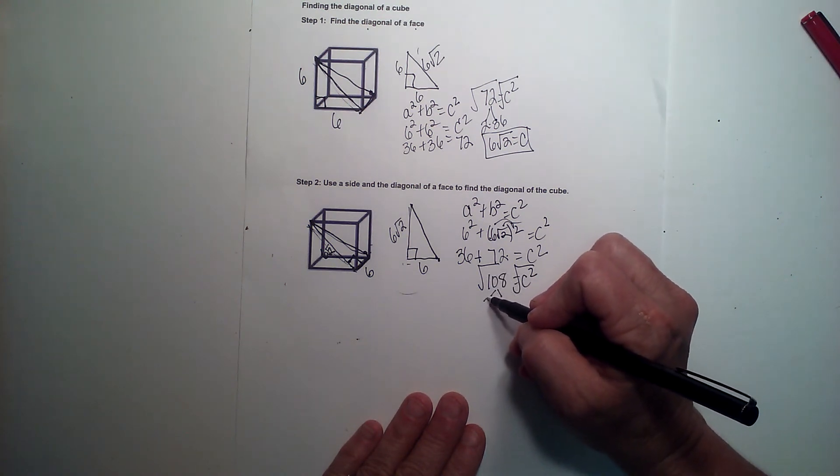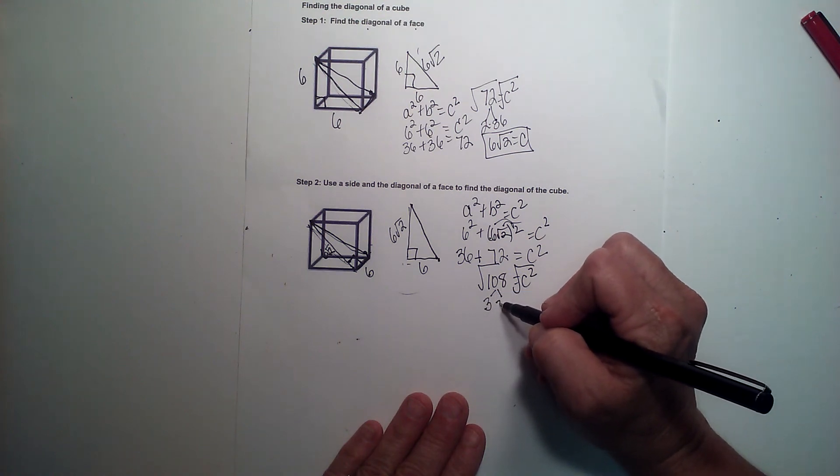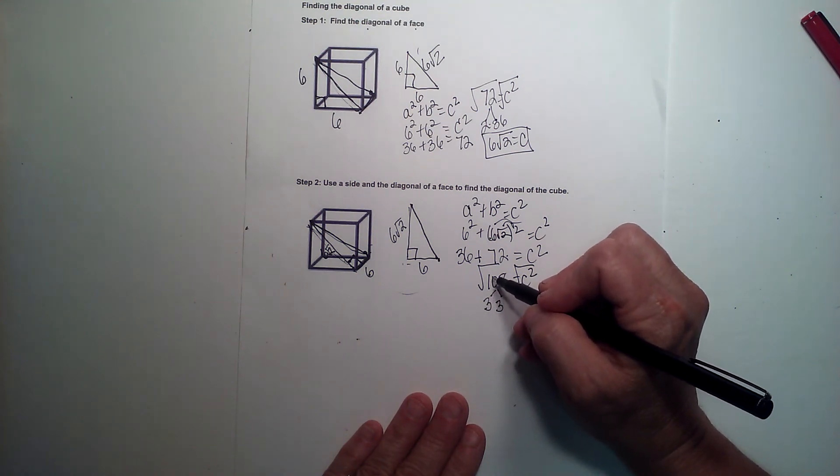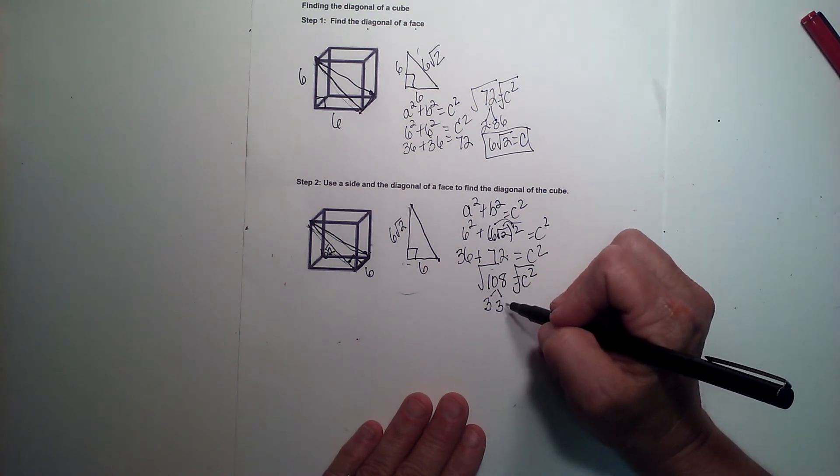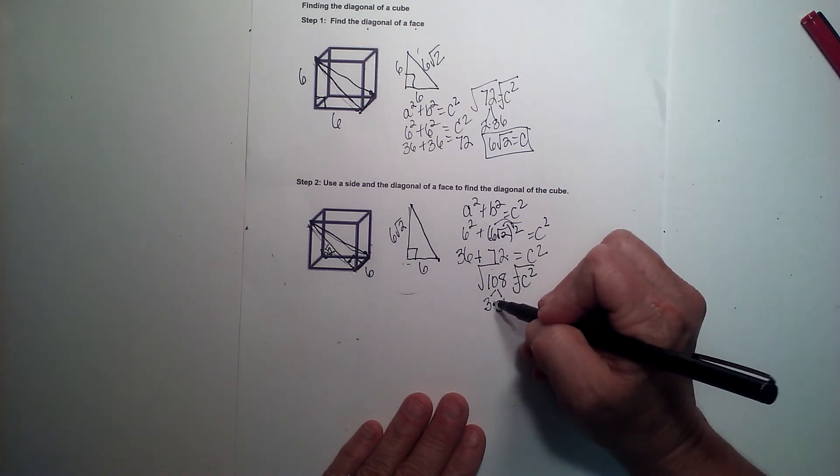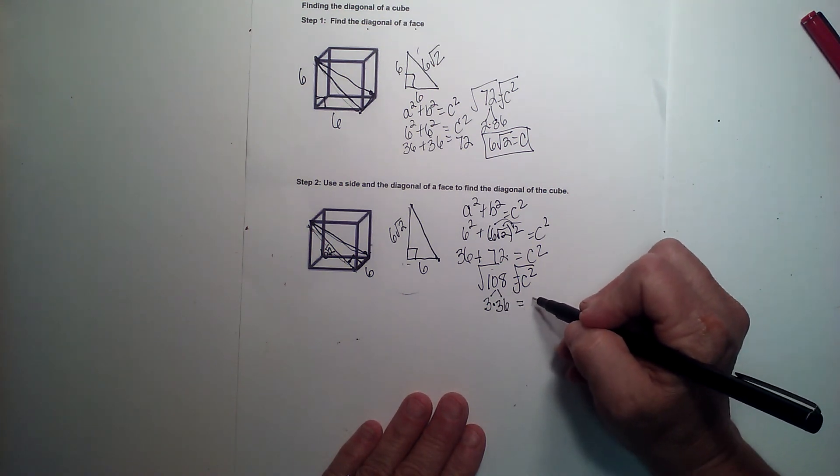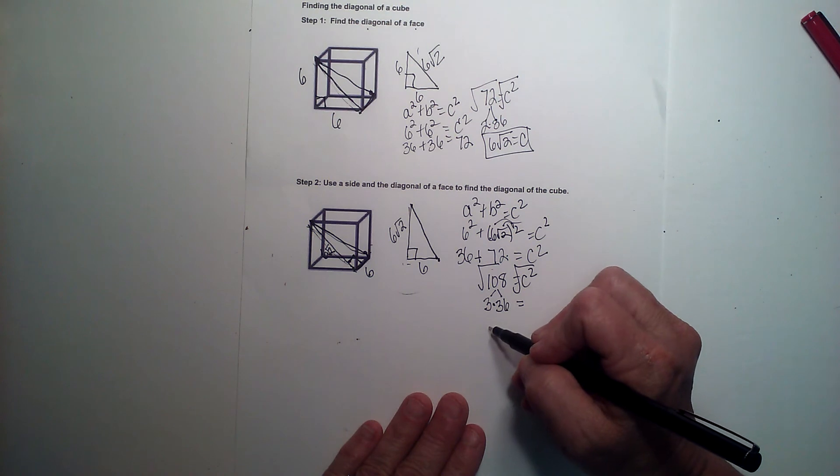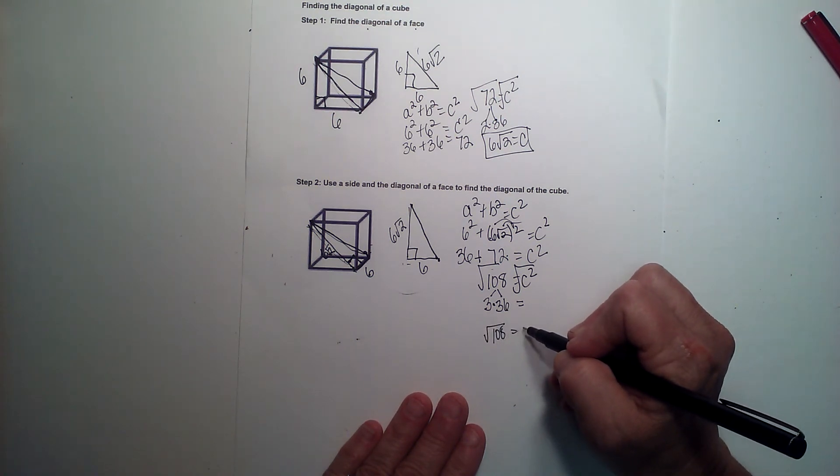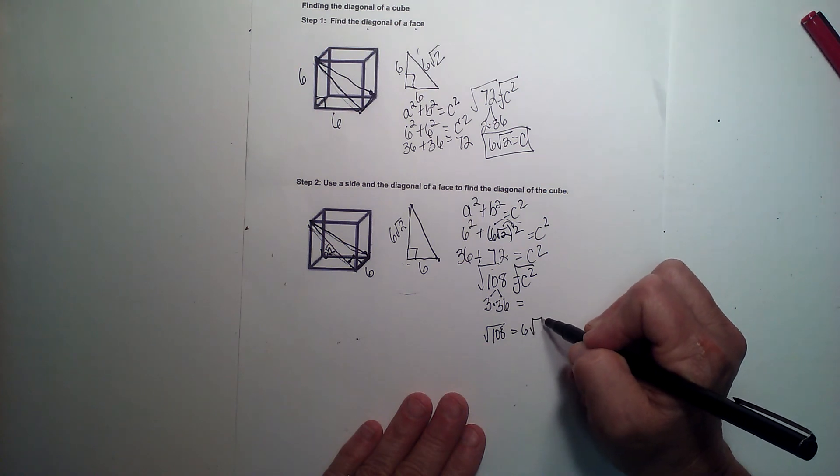This is going to be 3 times, if I divide it by 3, I'm going to get 3, 18, 36. And we know 36 is a perfect square, and it's going to come out. So that's going to be equal to the square root of 108, breaks down to 6 square root 3.